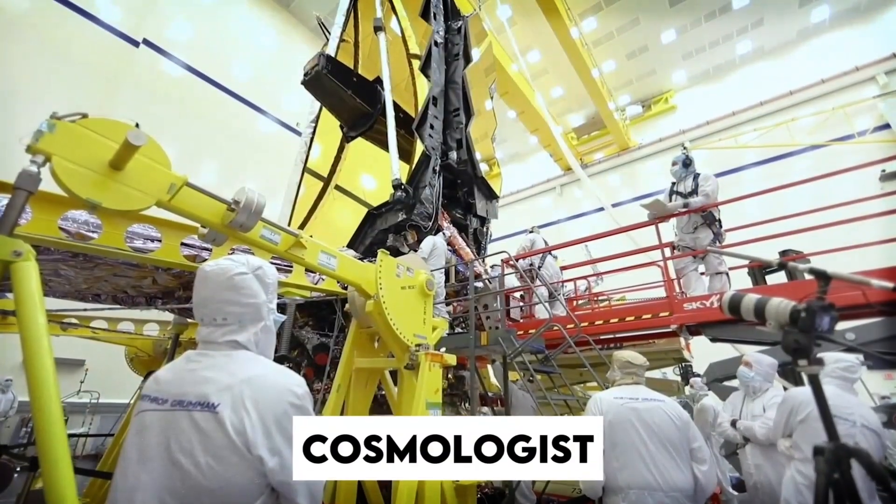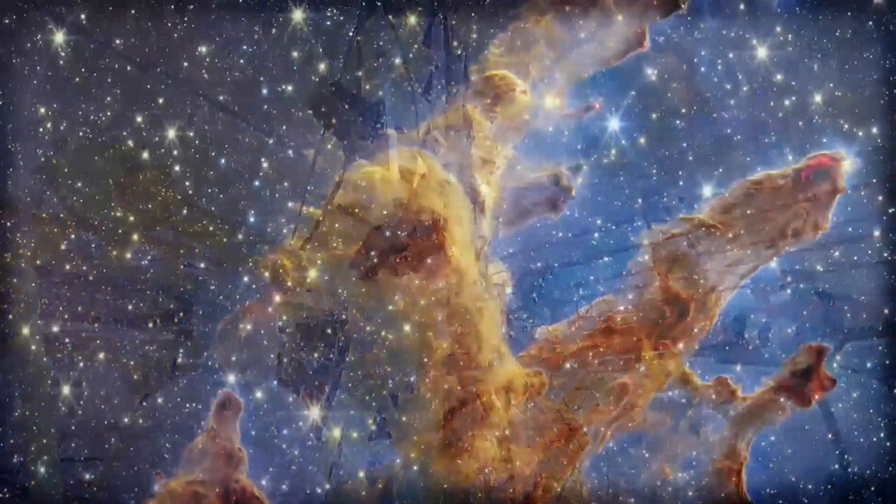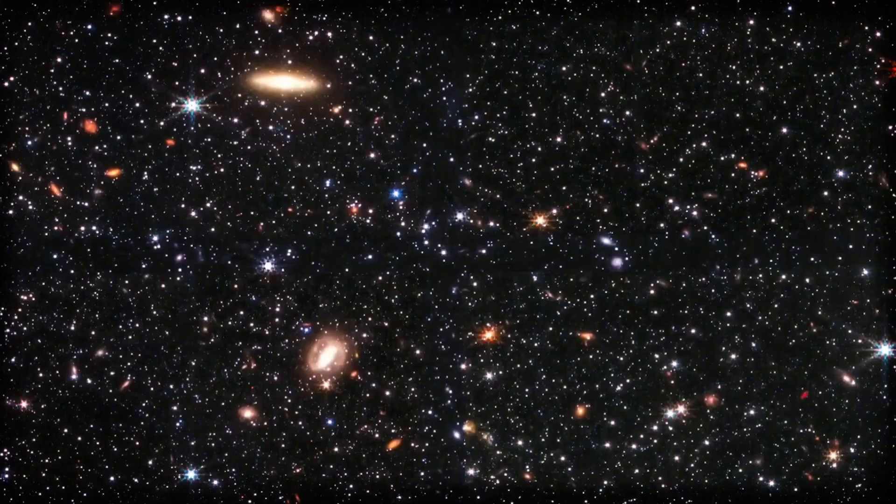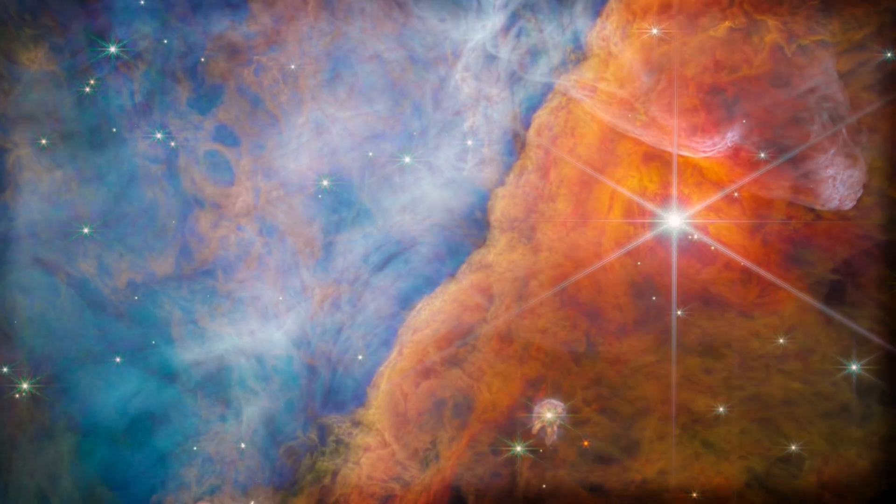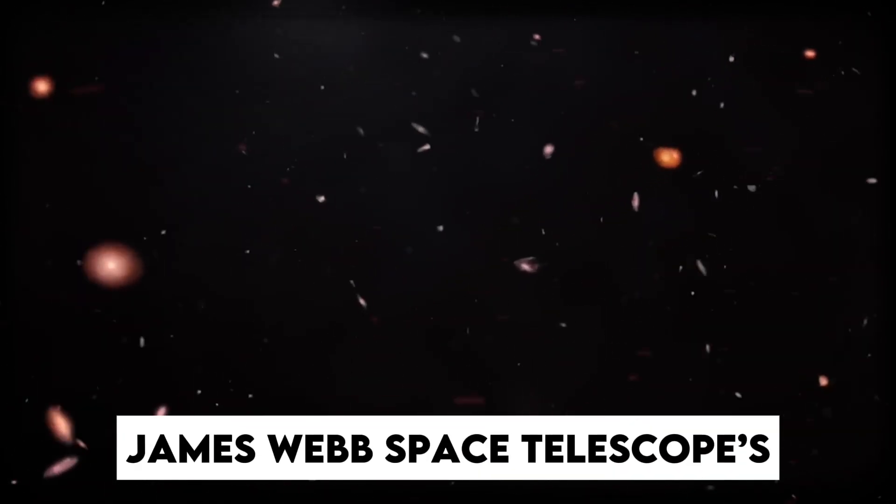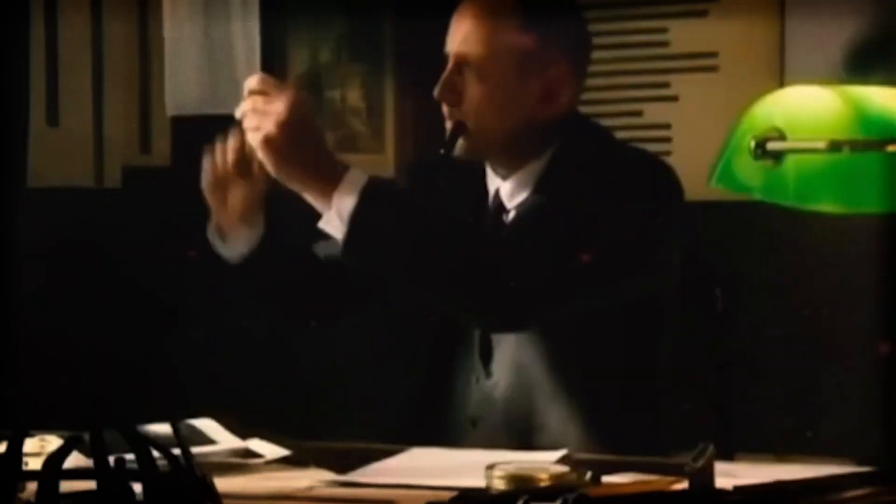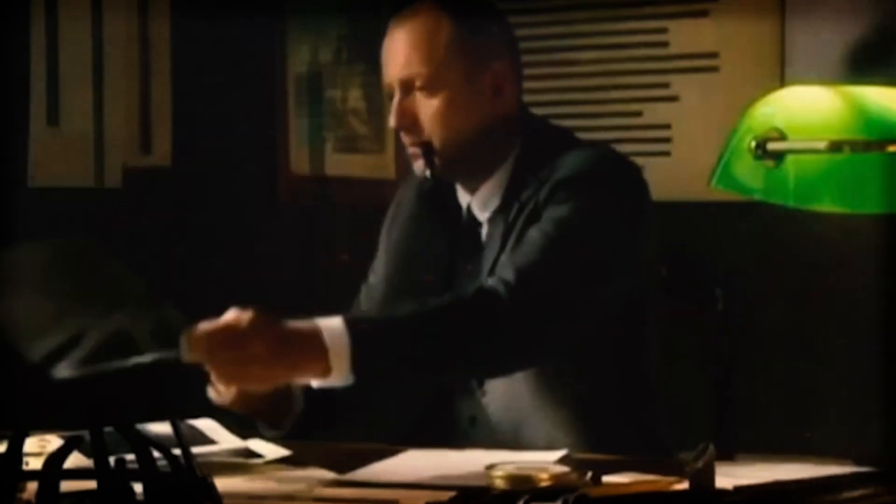For years, cosmologists believed that galaxies formed slowly, gradually taking shape in the first few hundred million years after the Big Bang. But now, the James Webb Space Telescope is shaking things up, forcing scientists to seriously rethink those long-held ideas.